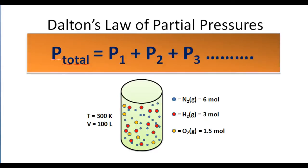Hey you guys, this is Mr. Millings, and today we're going to talk about Dalton's law of partial pressures. Let's suppose we have a container, and in this container we've got three different gases: nitrogen gas, hydrogen gas, and oxygen gas.